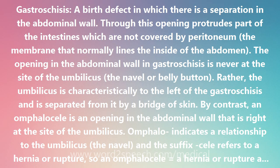Gastroschisis and omphalocele differ fundamentally in how they arise. An omphalocele is caused by an error in the embryonic development of the intestinal tract. During normal development of the embryo, there are initially three distinct portions of the intestinal tract — the foregut, midgut, and hindgut — that extend the length of the embryo.